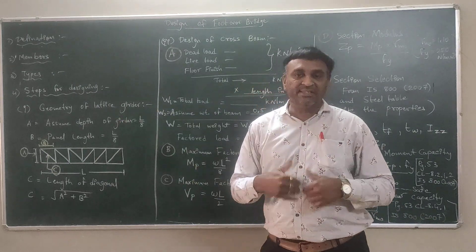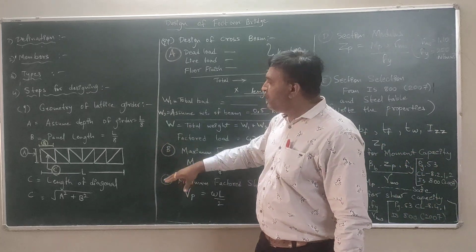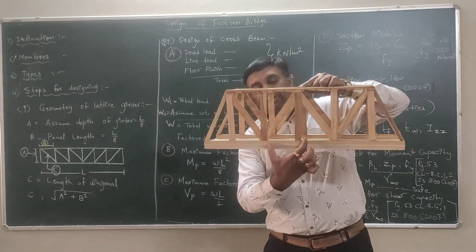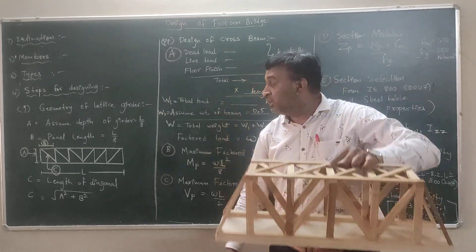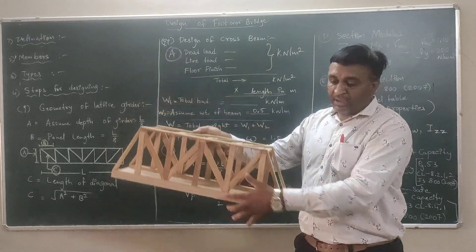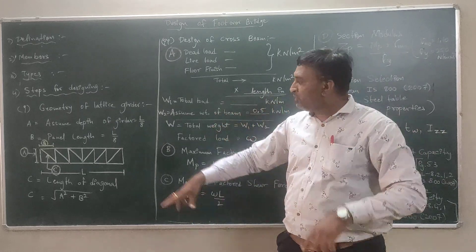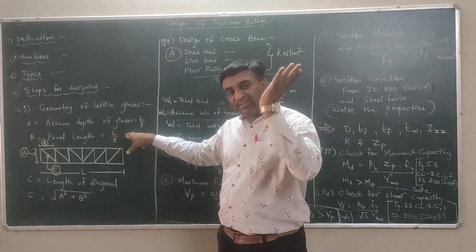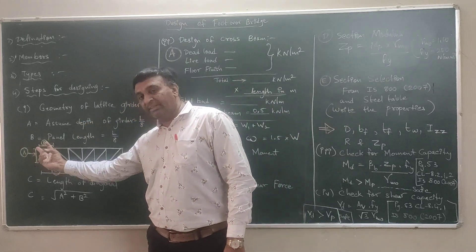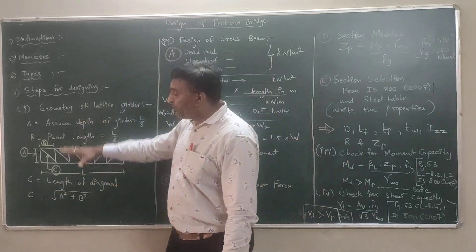The length of panel is also L/8, so we have 8 panels each of length L/8. The last geometric quantity is the diagonal. According to Pythagoras, the right-angle triangle has height A and width B, and the diagonal is calculated as √(A² + B²). This completes the initial geometry calculation — Step 1.